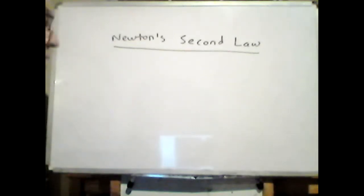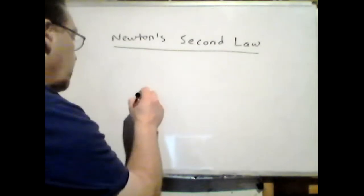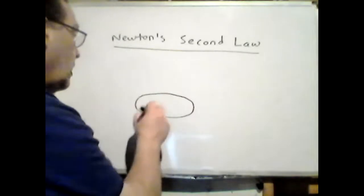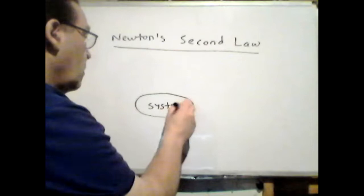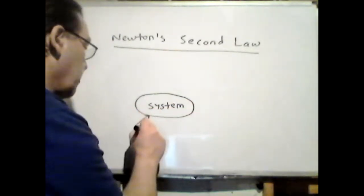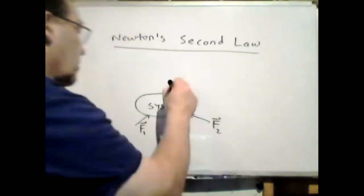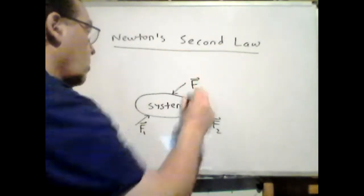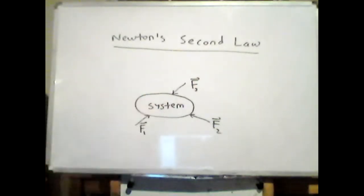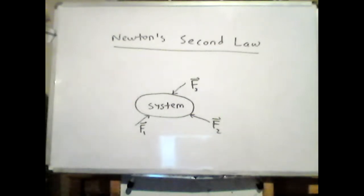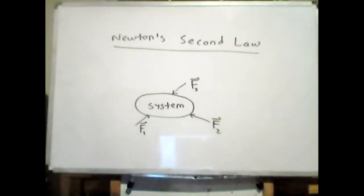Newton's second law deals with a system. We define a system — it could be a car with people in it — and there may be external forces on that system: F1, F2, F3. I don't care about what's going on inside the system. If my system is a car with people inside, the external forces I care about are friction on the tires, gravity, the normal force, or thrust — not people pulling on each other in the back seat; that's an internal force.